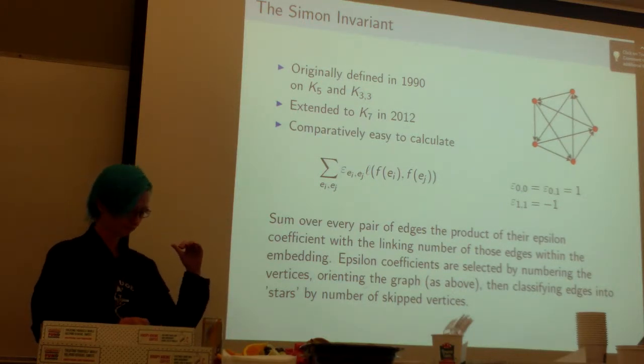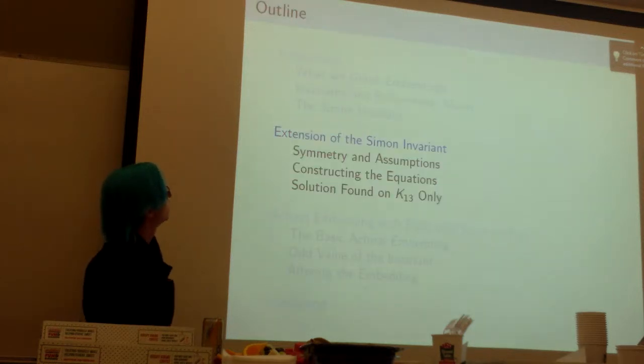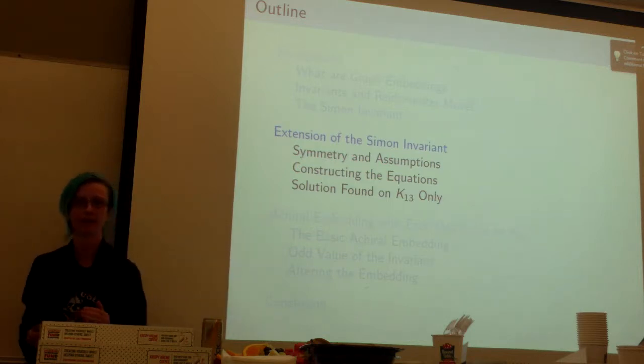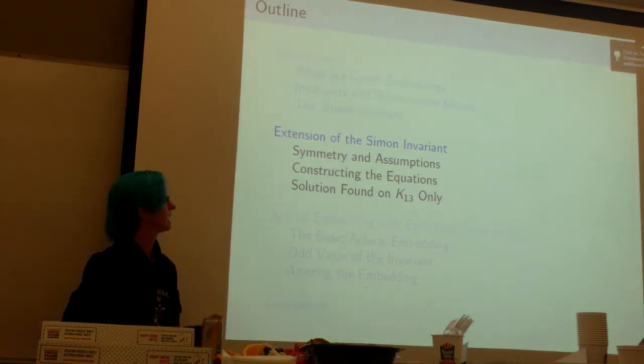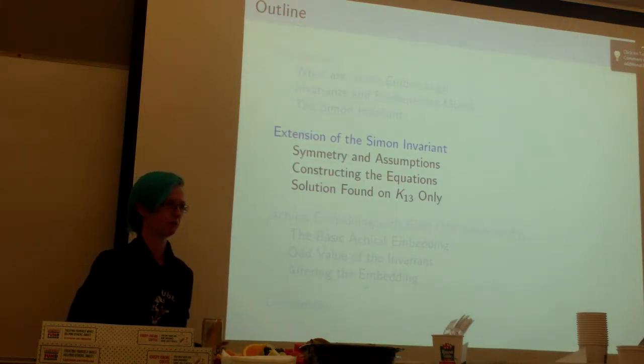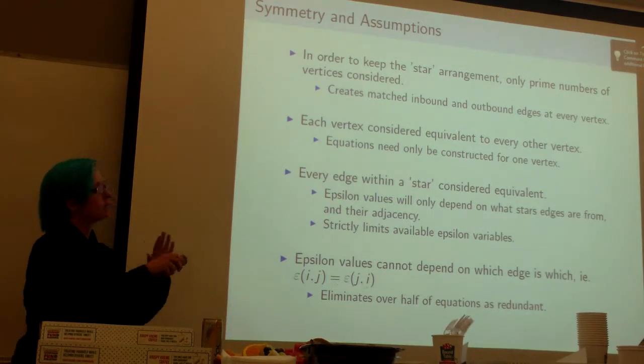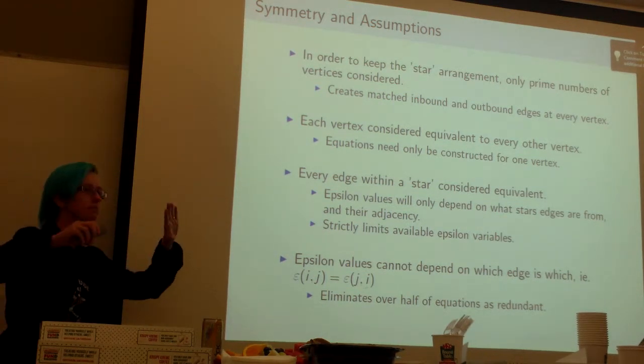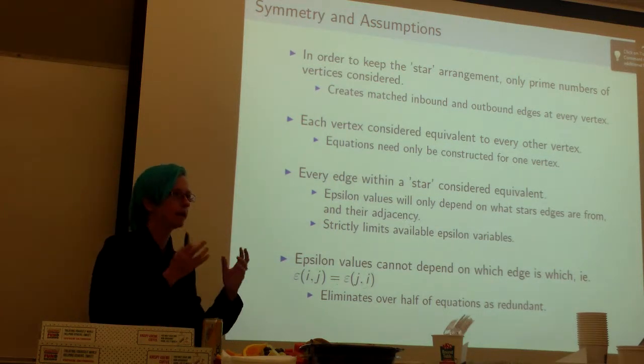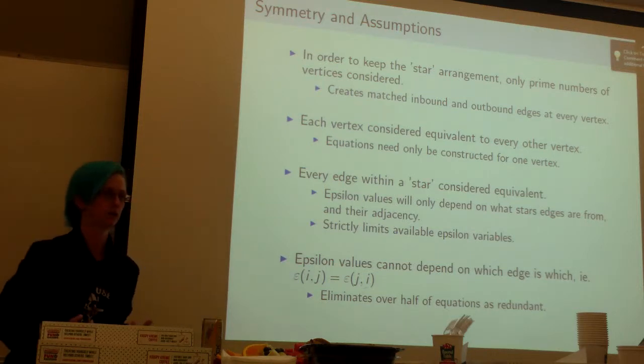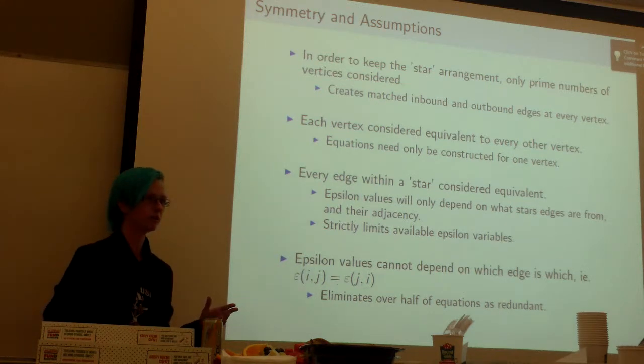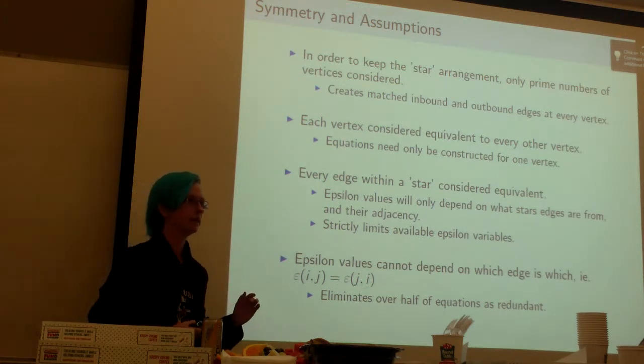I wanted to show you what we decided we have to do to this in order to make it work on a bigger graph and then how do you make those equations to make it work with the Reidemeister moves. We want to keep the same structure. I still want it to be in stars, so you go around the star, all those edges are going to be kind of the same. It's going to be one category of edges.